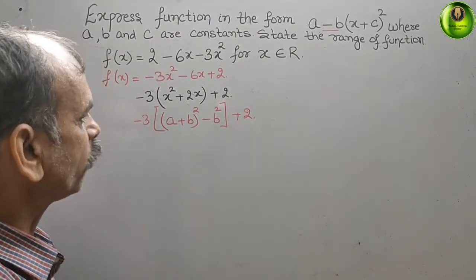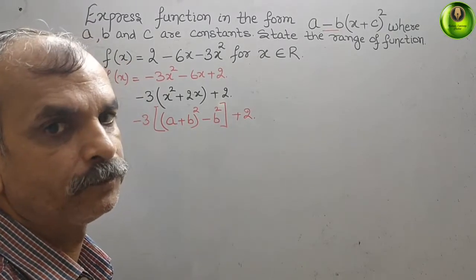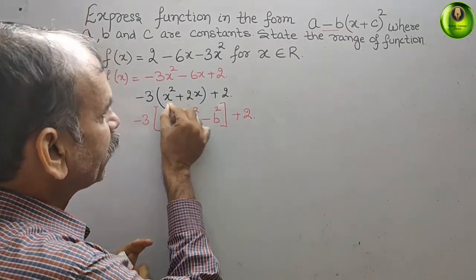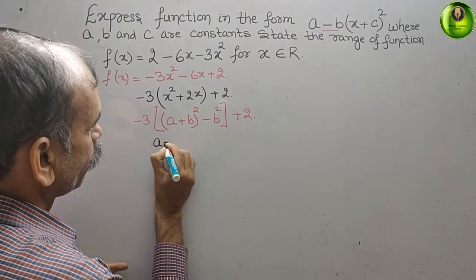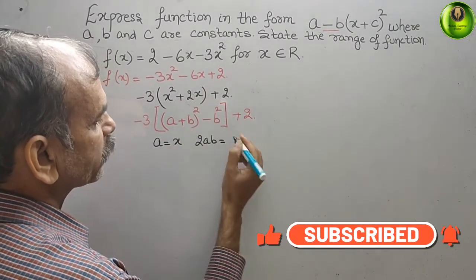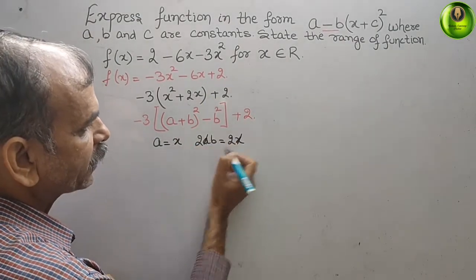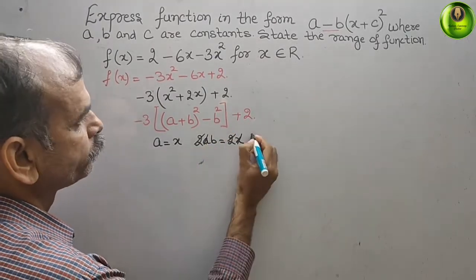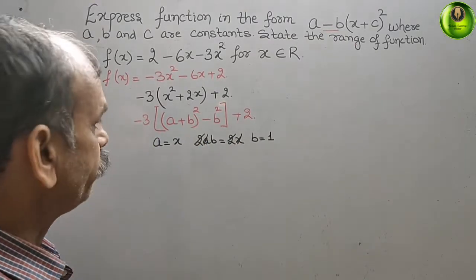Now we find the values of a and b. Since a square equals x square, a equals x. For 2ab, we have 2x times b equals 2x, so a and x cancel, 2 and 2 cancel, giving us b equal to 1. Substituting these two values, we get minus 3 times the expression.